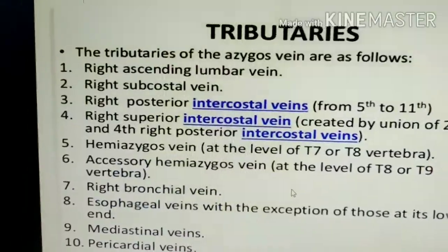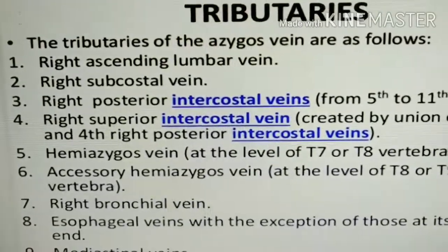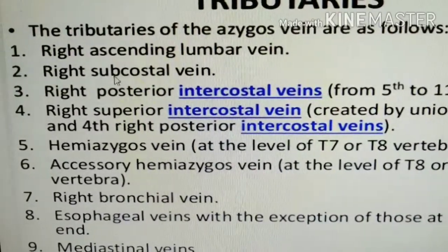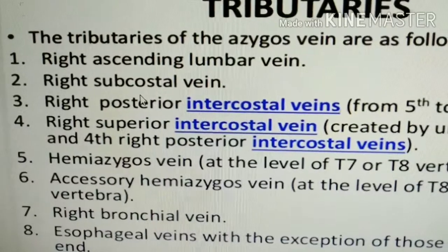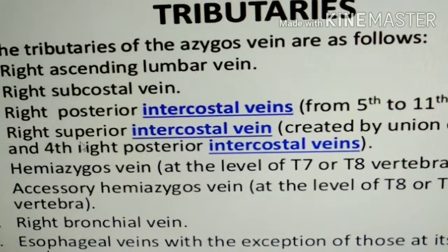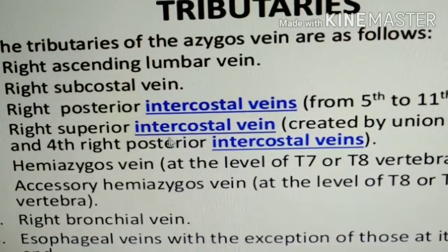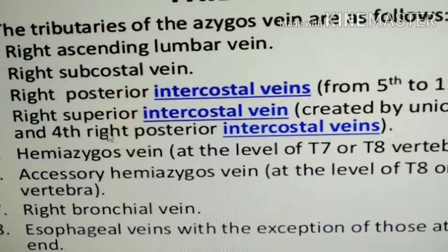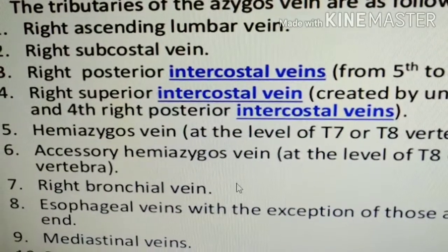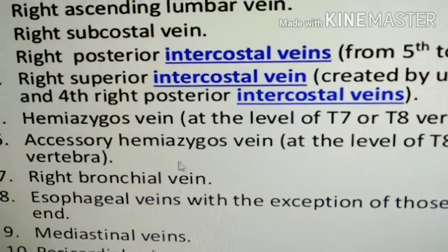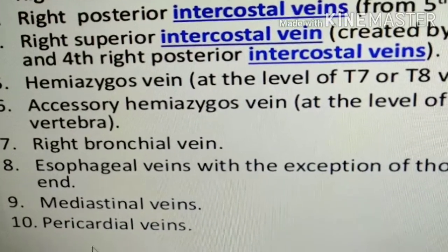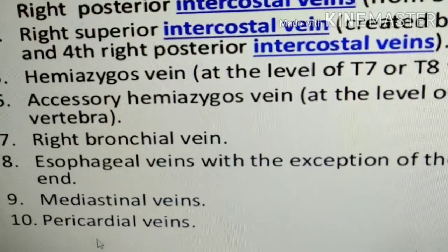Tributaries of the Azygos Vein: the formative veins — Right Ascending Lumbar Vein and Right Subcostal Vein; Right Posterior Intercostal Veins from 5th to 11th; Right Superior Intercostal Vein, formed by the 2nd, 3rd and 4th posterior intercostal veins; Hemiazygos Vein at the level of T7; Accessory Hemiazygos Vein at the level of T8; Right Bronchial Vein; Esophageal Veins; and Mediastinal and Pericardial Veins.